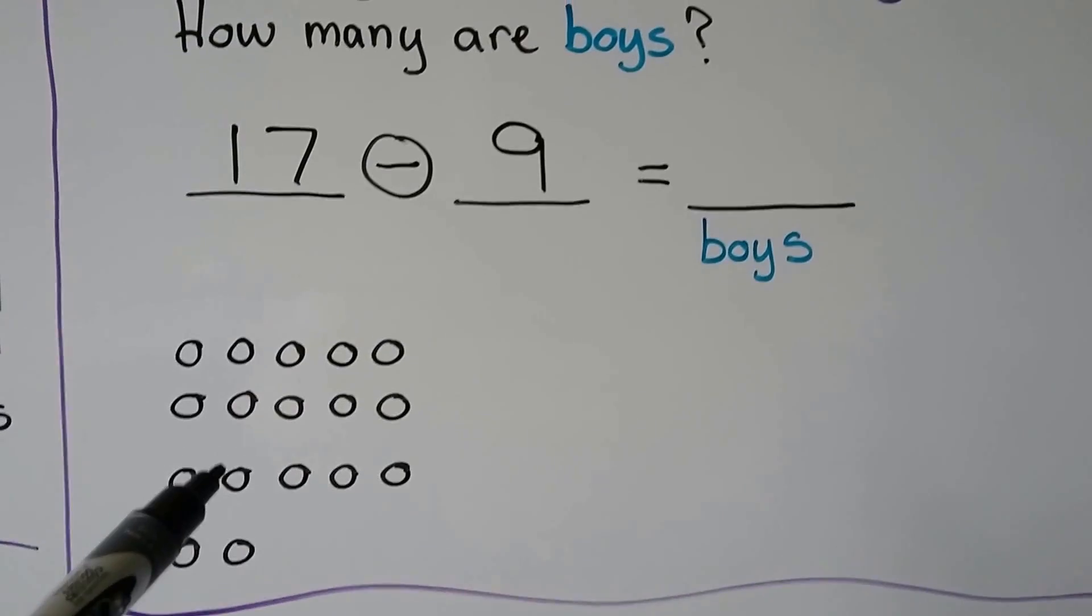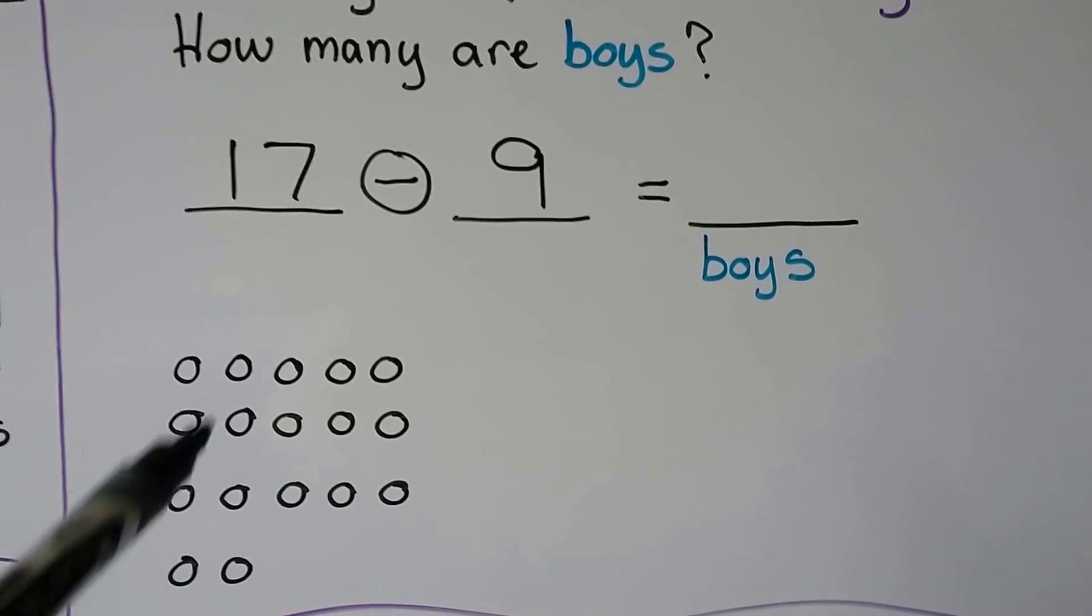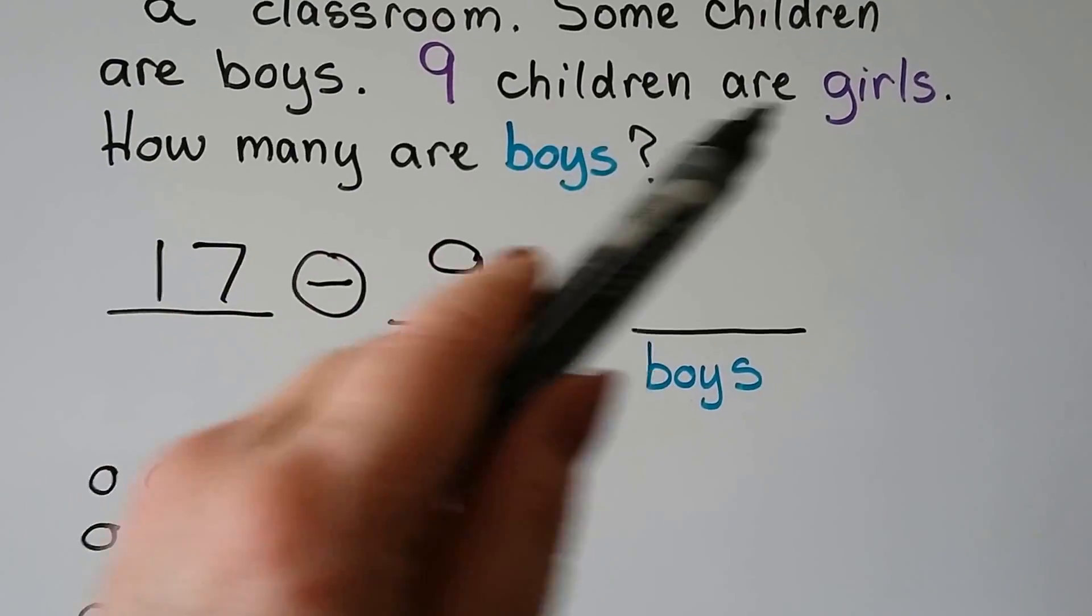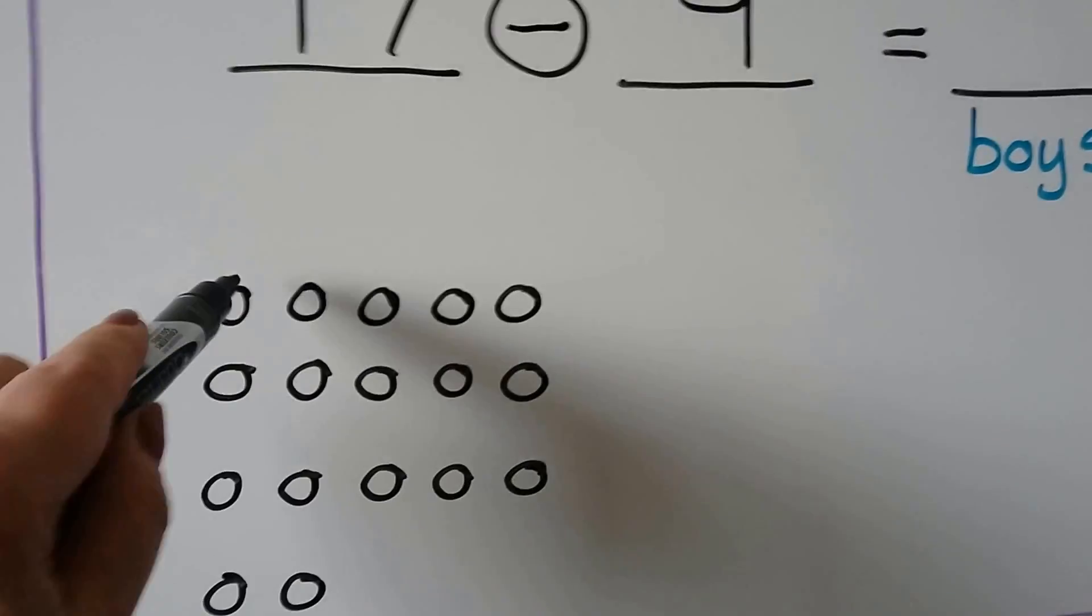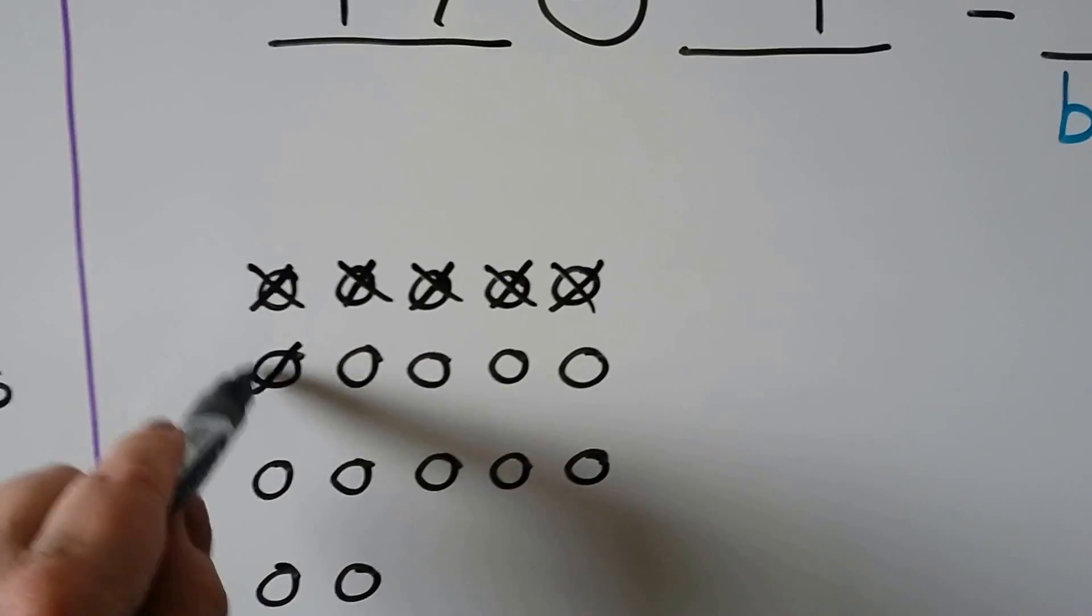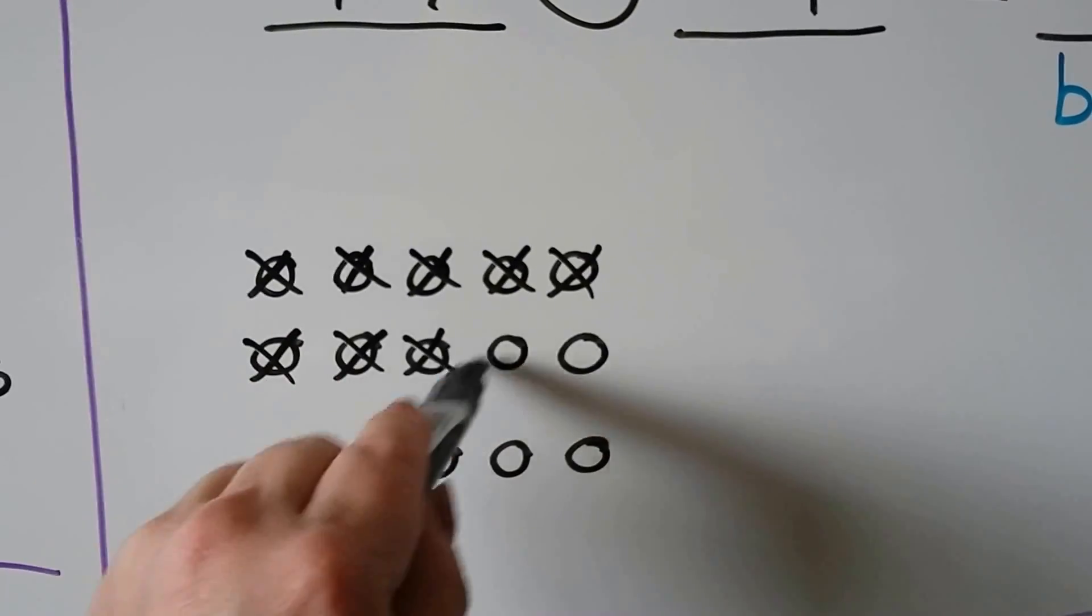We can draw 17 counters for the 17 children in the class, and we can take away the 9 children that are girls. We can cross them out. 1, 2, 3, 4, 5, 6, 7, 8, 9.